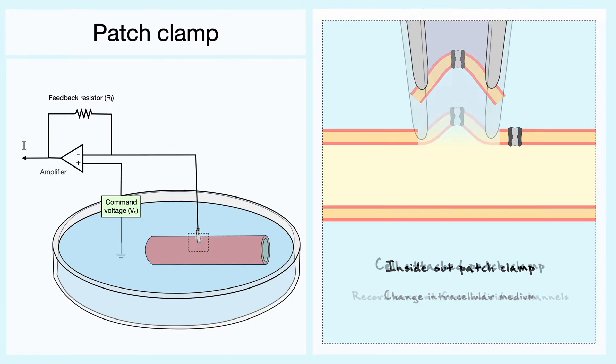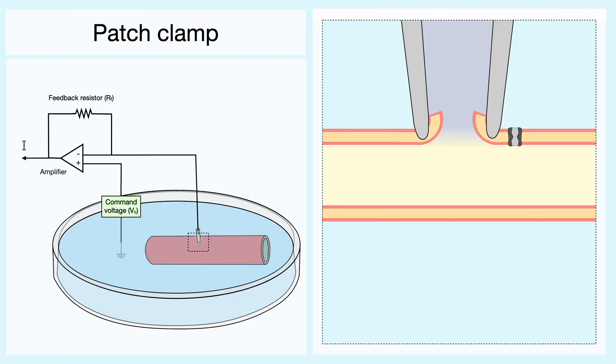Again, from the cell-attached recording, one can increase the suction to a point that will break the membrane. In this configuration, also known as the whole-cell patch clamp, the pipette is continuous with the interior of the cell, which allows to record measurements of the potential inside the entire cell.